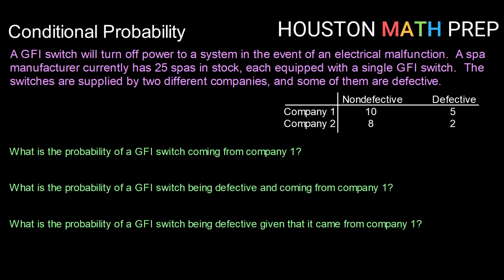So, in general, let's calculate some probabilities. What is the probability of a GFI switch coming from company 1? So that would be the number that came from company 1 divided by the total number of GFI switches that we have. So the total number that have come from company 1 is 10 plus 5 or 15 divided by 25, which is the total number we have. Now, both of those are divisible by 5, so we can get 3 out of 5. If we wanted to work in decimals for this one, just to be able to more easily compare, 3 out of 5 is 0.6. So we would have a probability of 0.6, or 60% of the GFI switches came from company 1.